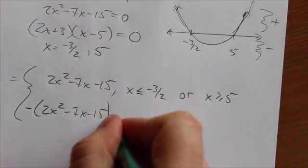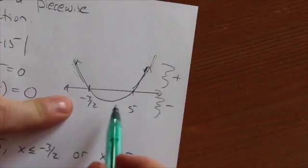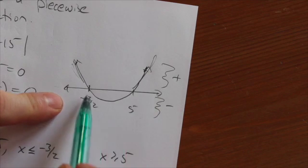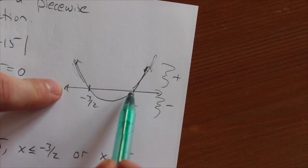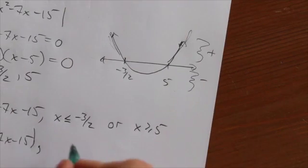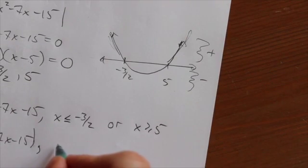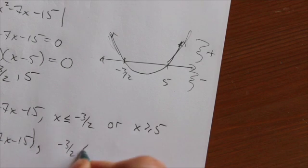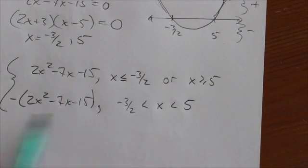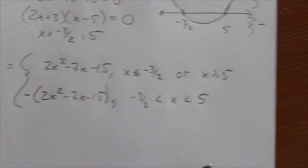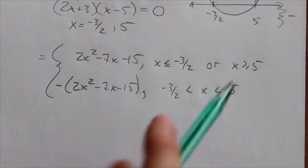when the function is negative. The function is negative when it dips below the x-axis in between these two roots. It drops below here and then it goes above on the other side of 5. So what's going to happen is as long as we are between negative 3 halves and 5, then the absolute value is going to change the function. And so this is what the piecewise part of that would look like.